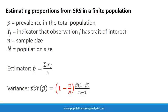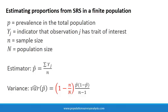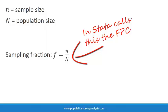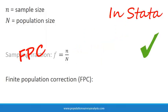Before I move on to an example, I should note that Stata's definition of the finite population correction factor is what I have defined here as the sampling fraction, small n over big N. If you are entering a finite population correction factor value in Stata for an analysis, be sure to give small n over big N and not 1 minus small n over big N.